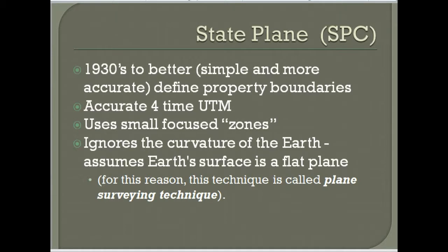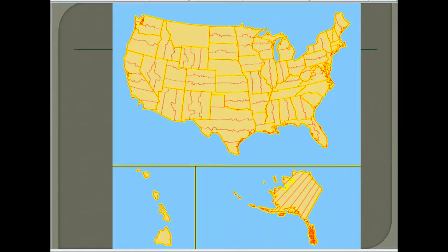The state plane coordinate system was developed in the 1930s as a way to ignore the curvature of the Earth and map different state areas in small increments. It's about four times more accurate than UTM because it focuses on small areas. To accomplish this, states are divided into state plane zones. In Oregon, there's a northern zone and a southern zone. Since Oregon has more of an east-west orientation, the conic projection is used.